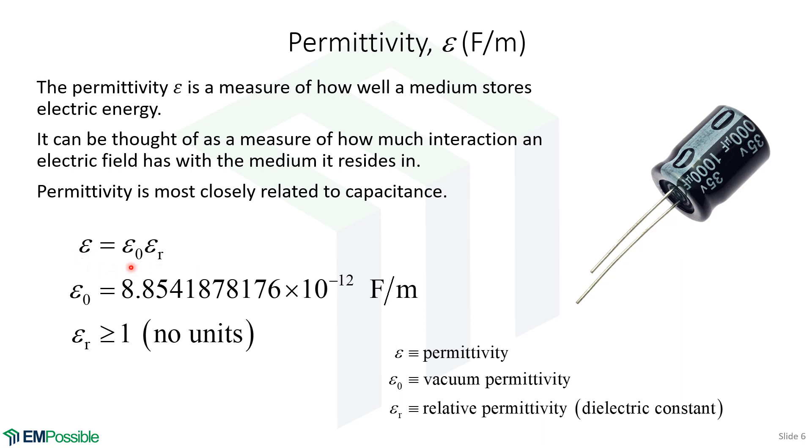So very often, we'll write the permittivity as the product of two terms. We'll have the free space permittivity, which is 8.854 times 10 to the minus 12 farads per meter. Remember, farad, that's units of capacitance. So it's the free space permittivity times a relative permittivity. So this is a factor that tells us how much greater than the free space permittivity the actual permittivity of the medium is.